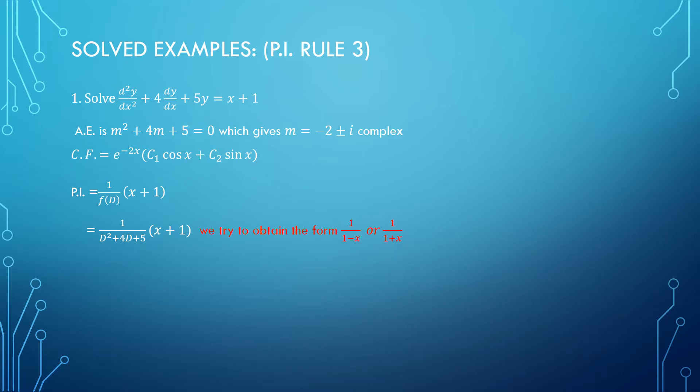When I operate 1 upon f(d) over x plus 1, I write 1 upon d² plus 4d plus 5 operated. We will rearrange the expression to get one of these two forms. I am going to get 1 upon 1 plus x form. I need the constant to be 1, so let us take 5 common. My expression becomes 1 upon 1 plus (d² plus 4d)/5. I can apply the series 1 upon 1 plus x equals 1 minus x plus x².